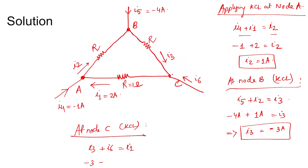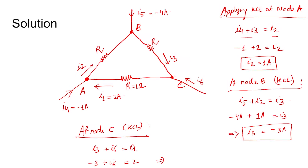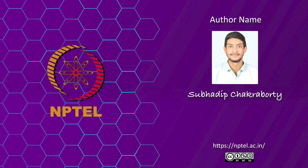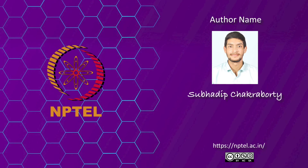At node C, applying KCL: i3 is entering, i6 is also entering, and i1 is leaving. i3 = -3 ampere and i1 = 2 ampere. This implies i6 = i1 - i3 = 2 - (-3) = 5 ampere. Looking at the options, i6 = 5 ampere is the correct option.